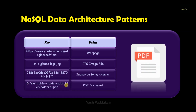Let's see one more example. Here we have a directory path to a particular file which is patterns.pdf. So the key is the particular path and the value is the entire file which is present in that particular path, which is nothing but patterns.pdf. So I hope this entire key-value pair concept is clear to you all.